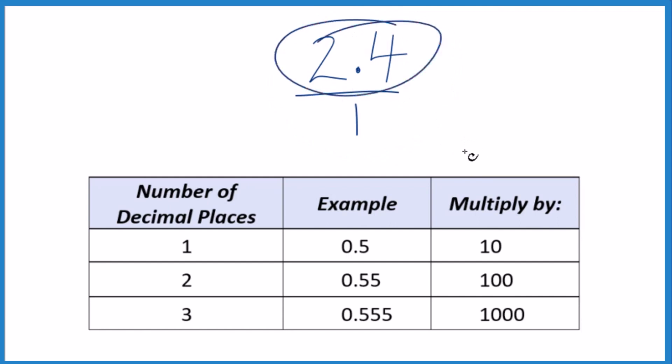What I'd like to do is get this 2.4 to be a whole number, and I can see I have one decimal place here. So with one decimal place, I could just multiply that numerator by 10, and that would give me a whole number. So 10 times 2.4 equals 24.